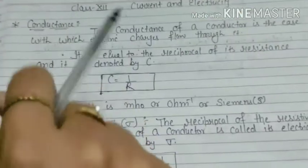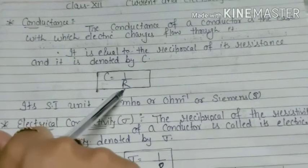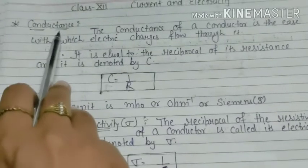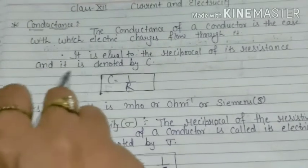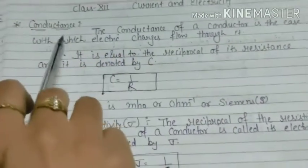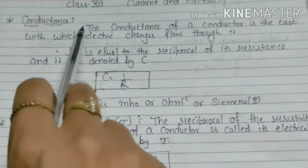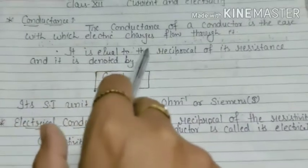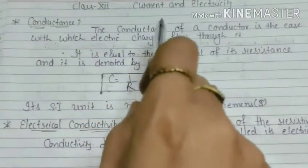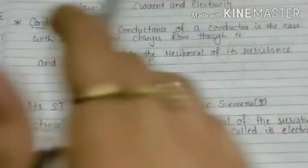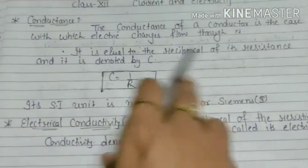Last lecture we discussed resistance — resistance was the obstruction in the path of current. Now conductance: the conductance of a conductor is the ease with which electric charge flows through it. This means how easily the electric charge flows through it — conductance is essentially the reciprocal of resistance.